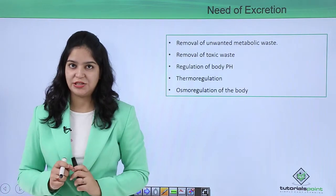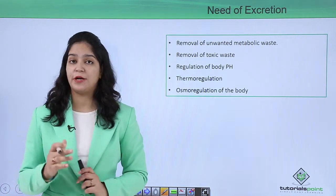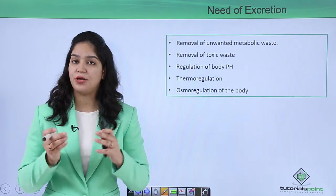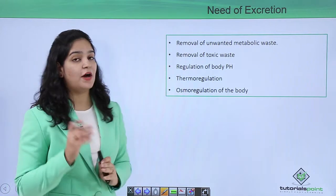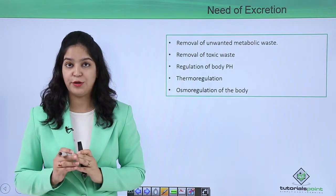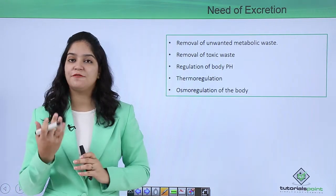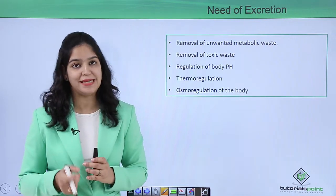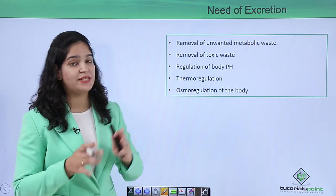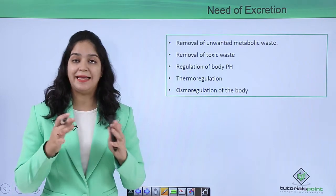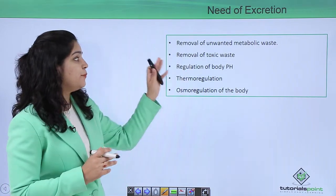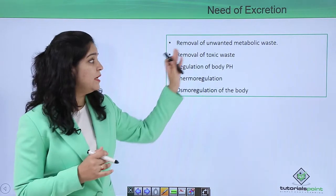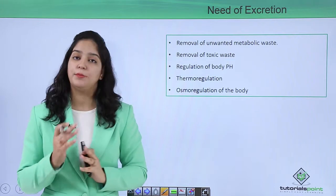Excretion is very important for our body; otherwise these waste products will act as a poison. First, removal of unwanted metabolic waste: our cells produce different metabolic waste by the metabolism of carbohydrates, proteins, and fats, so these metabolic wastes have to be removed from the cell and then from the body. Second, removal of toxic waste: the breakdown of hemoglobin and drugs produces some toxic waste which also has to be removed.